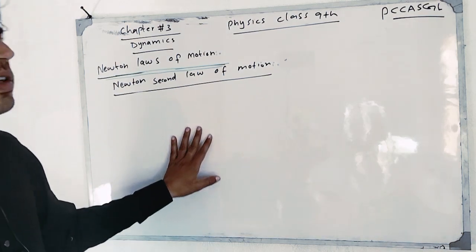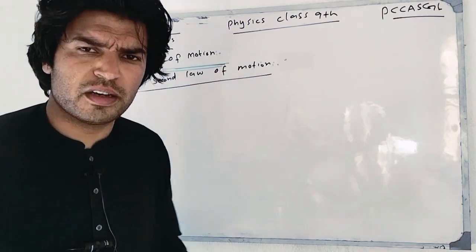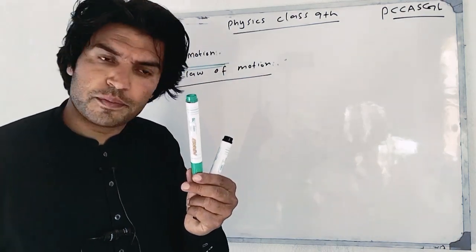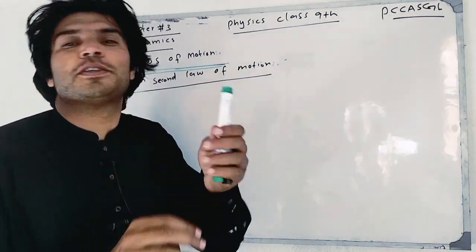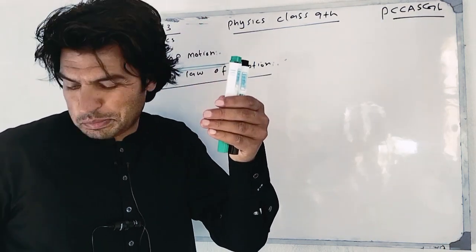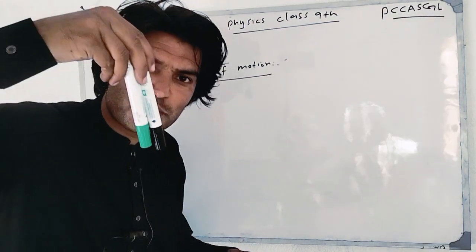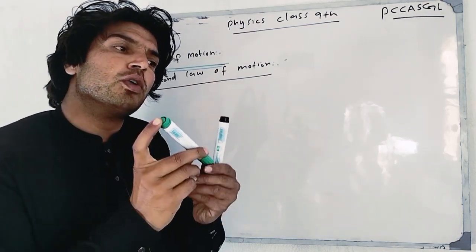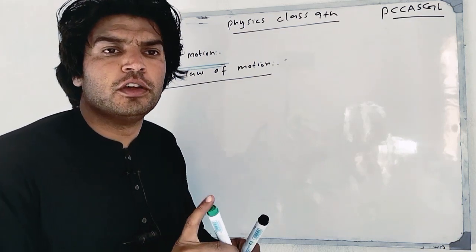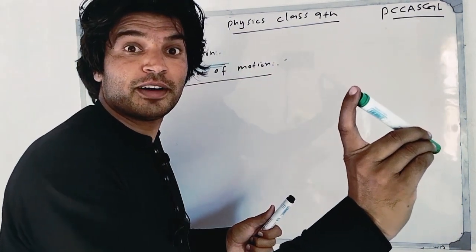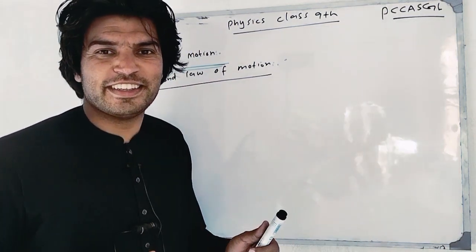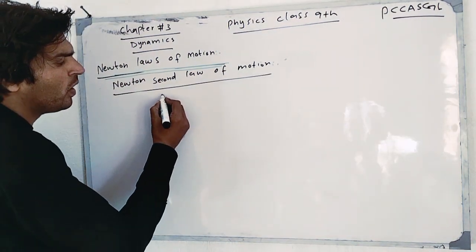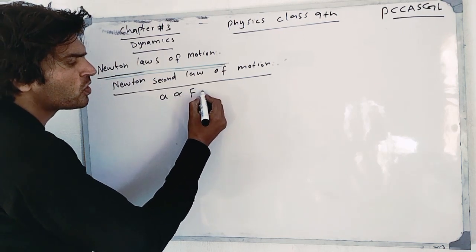Newton's Second Law of Motion is very simple. It gives us two important pieces of information. For example, with a marker on the table — if I apply less force, the marker will accelerate less. If I apply more force, it will accelerate more. This is the basic idea behind Newton's Second Law: acceleration is directly proportional to the applied force.